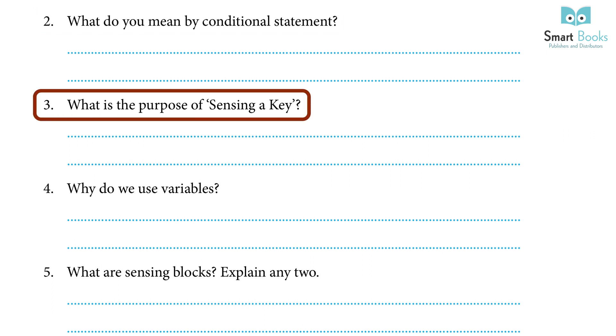3. What is the purpose of sensing a key? Answer: Sensing blocks are used to recognize and quantify the interactions between items in a project or to track specific mouse and keyboard motion. It is color-coded blue and is one of the nine blocks.